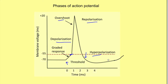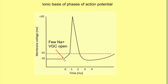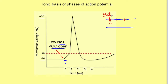So what is the ionic basis of generation of these phases? With the excitatory stimulus there is opening of a few voltage-gated sodium channels. These channels are present on the membrane. Suppose this is the membrane and here are the channels — when these channels open, sodium ions enter from outside the cell to the inside, along their concentration gradient, since sodium ions are more concentrated outside the cell. So basically this is a facilitated diffusion of sodium ions occurring.